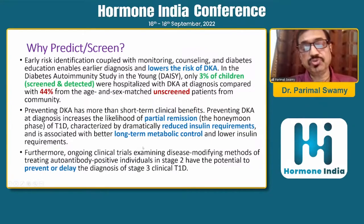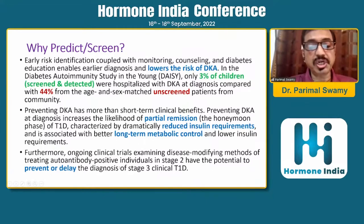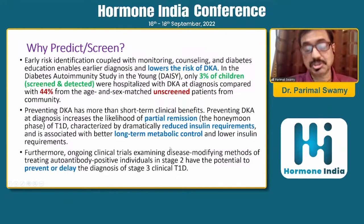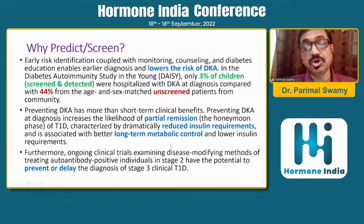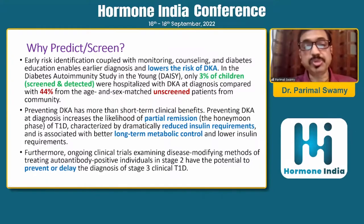Prevention of DKA through family intervention, insulin therapy, education, and frequent blood sugar monitoring leads to partial remission, reduced insulin requirements long-term, and better metabolic control. In populations with higher background incidence of type 1 diabetes, all efforts should be made for prediction and screening. With the advent of newer therapies, there is an opportunity to prevent or delay stage 3, and in future, type 1 diabetes could be prevented altogether.